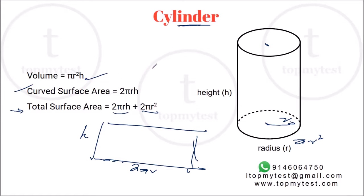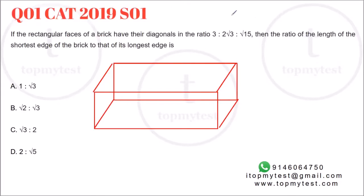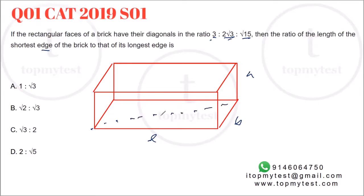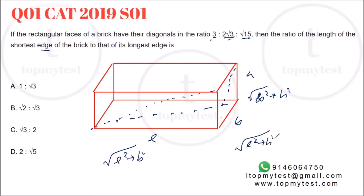Let's use these properties to solve a few questions from past papers. The first question is from CAT 2019 Slot 1. If the rectangular faces of a brick have diagonals in the ratio 3 to 2 root 3 to root 15, then the ratio of the length of the shortest edge to the longest edge is how much? This is not the ratio of sides but the ratio of face diagonals. Unlike a square, each pair of faces has a different diagonal: square root of L squared plus B squared, square root of B squared plus H squared, and square root of L squared plus H squared.